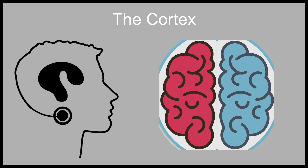Ever heard of the term right brain, left brain? This phrase introduced most of us to the next part of our brain — the cortex. Our cortex is made of two sides, or hemispheres: the left hemisphere and the right hemisphere. This part of the brain is responsible for our short and long-term memories.